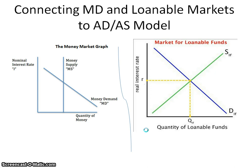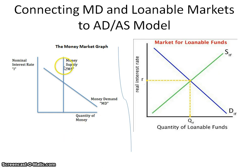Now let's connect Unit 4 with Unit 3 — this is what's great about economics, being able to work across units together. From Unit 4 we have the money market graph, with the vertical money supply set by the Fed and the downward-sloping money demand curve, with the nominal interest rate on the vertical axis.